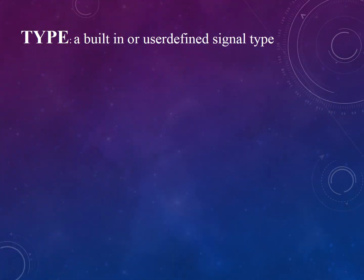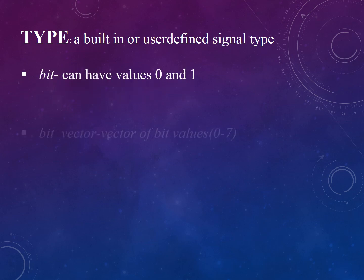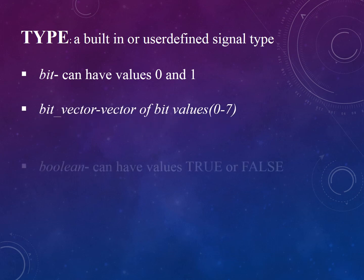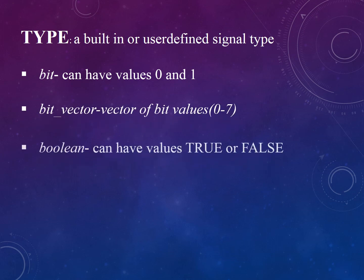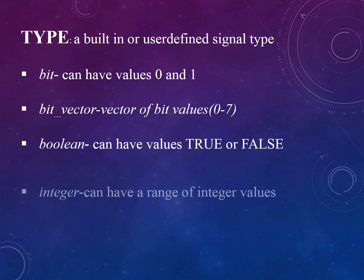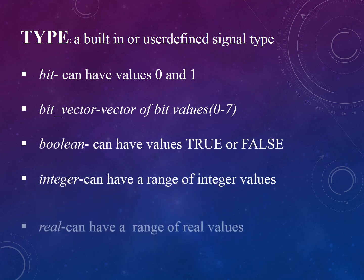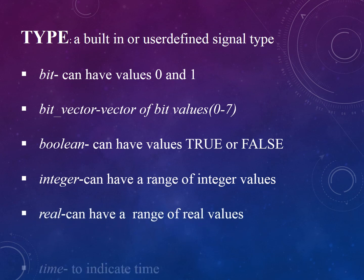Type is a built-in or user-defined signal type. The different types are: bit, which can have value zero or one; bit vector, which is a vector of bit values between zero and seven; boolean, which can have values true or false; integer, which can have a range of integer values; real, which can have a range of real values; and time, which is used to indicate time.